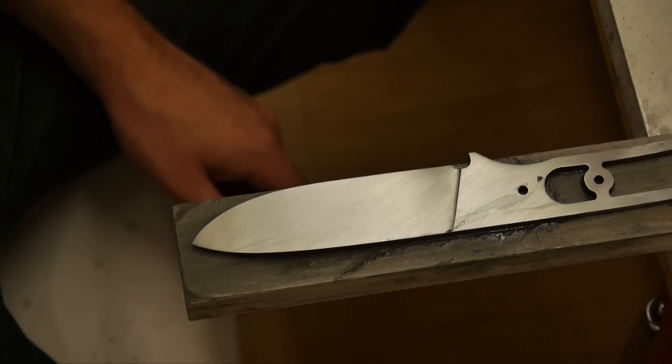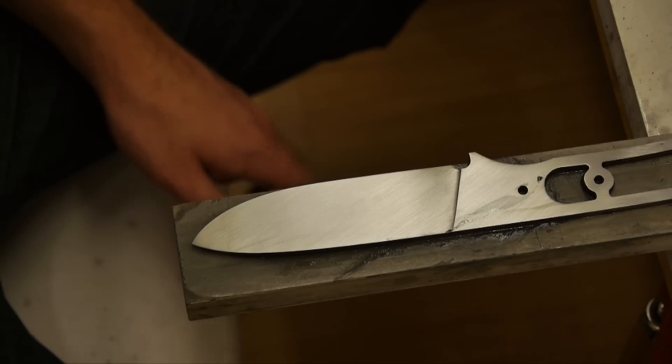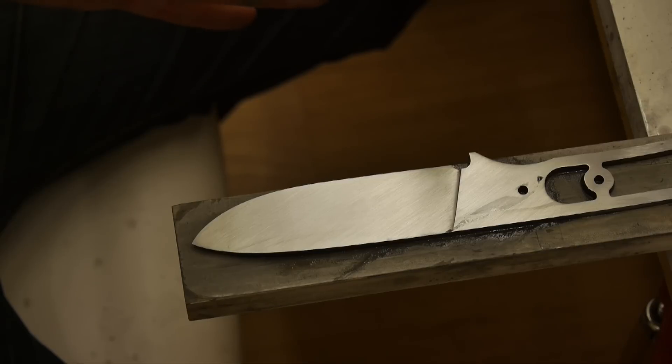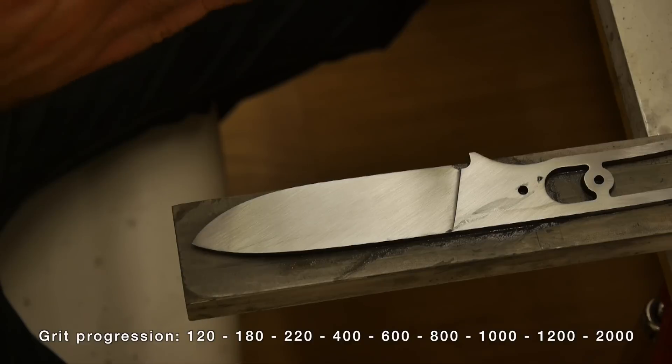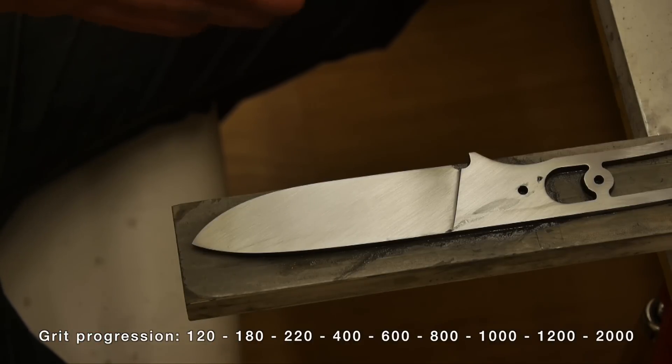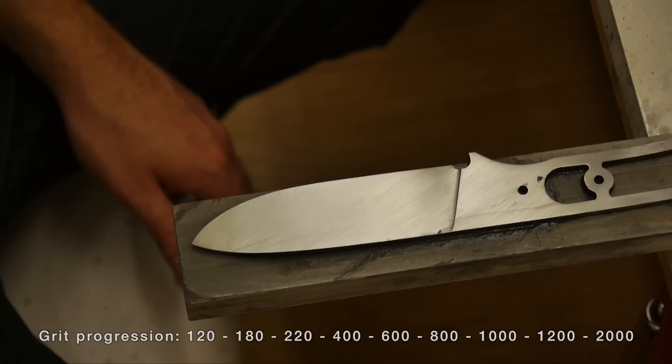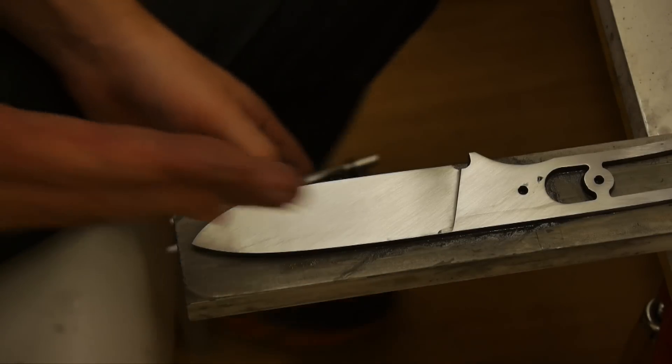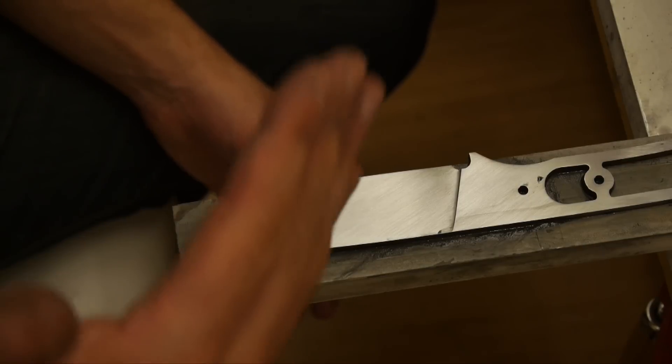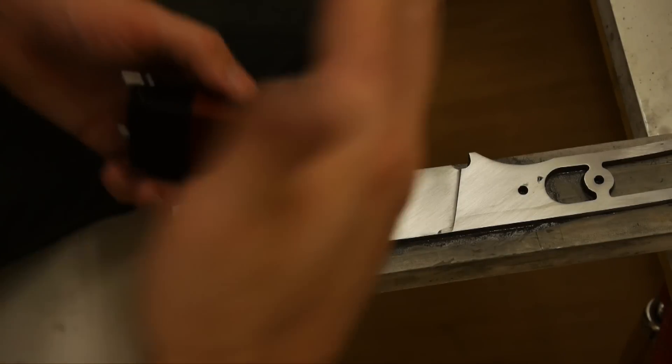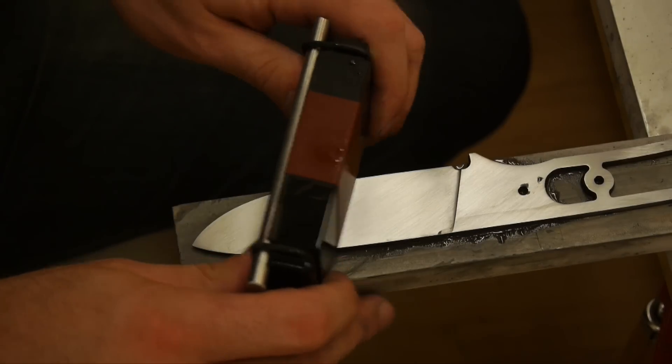So now we're going to move on to the next grit and for me I'm moving from 400 grit to 600 grit. You don't want to skip grits too much so if you're at 120 then you want to move up to 220 or 180 and then from 220 you'd go to 400 to 600 to 800 so on. There is a progression of grits that you should use. When you change grits you also need to make sure you change direction so you can tell which grit marks are from which grit. So I'm changing from 400 to 600 so I'm just going to alternate the grit direction and I'm going to start sanding at 45 degrees the other way.